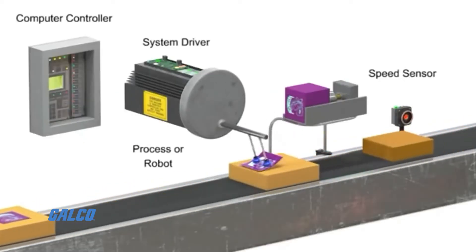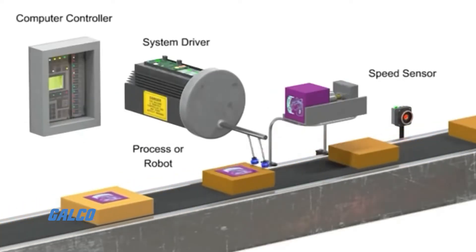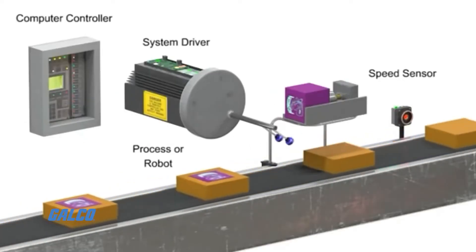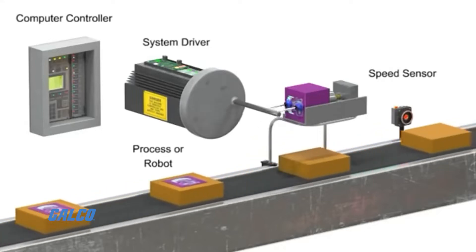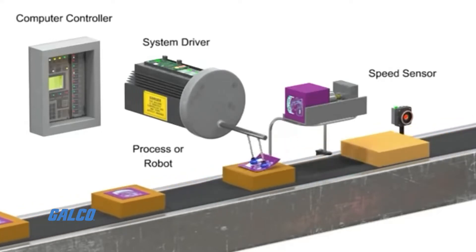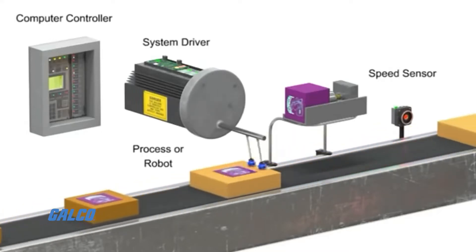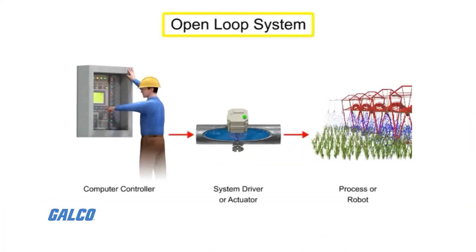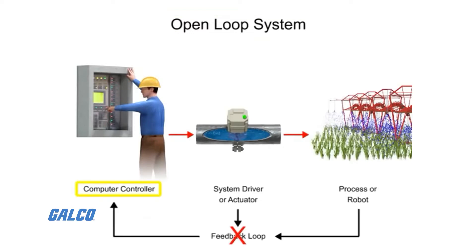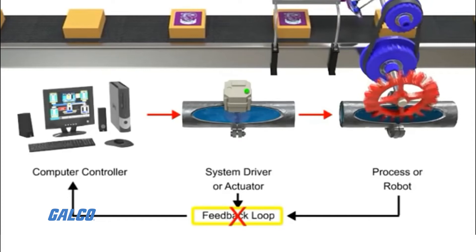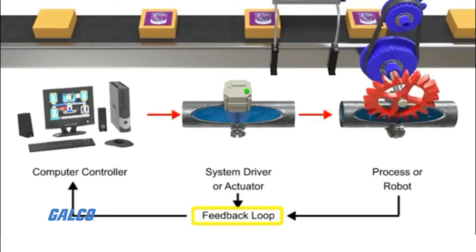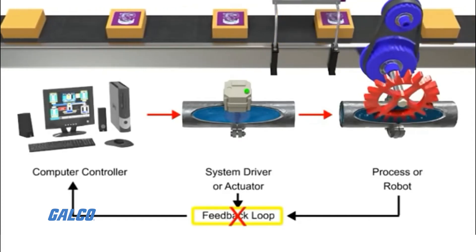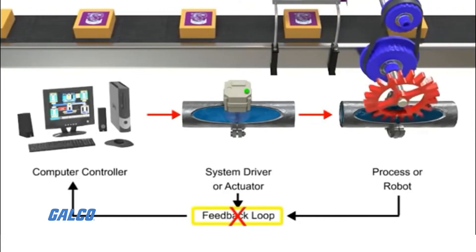The information regarding the shaft position allows the controller to figure out if the torque output is incorrect. Open-loop vector control is when an encoder is not used and avoids the need for a feedback device by using a mathematical model of a motor's operating parameters.